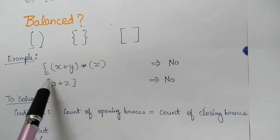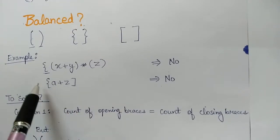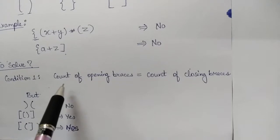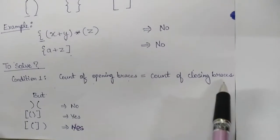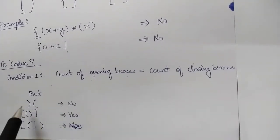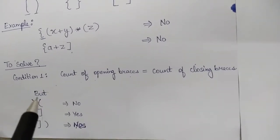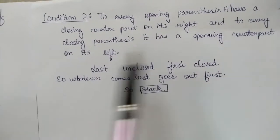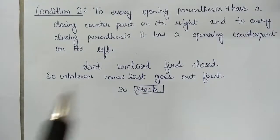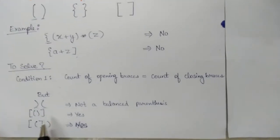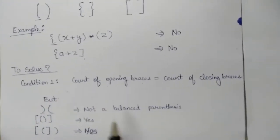Another example doesn't have the closing brace for the curly brace, and it also doesn't have the opening brace for the square bracket. From all this we come to Condition 1, which states that the count of opening braces should be equal to the count of closing braces. However, there may exist a case where this condition is satisfied but the expression still won't be balanced. So here comes Condition 2, which says every opening parenthesis should have a closing counterpart to its right, and every closing parenthesis should have an opening counterpart to its left. Looking back at an example, though it satisfies Condition 1, it doesn't satisfy Condition 2, hence it's not a balanced parenthesis.